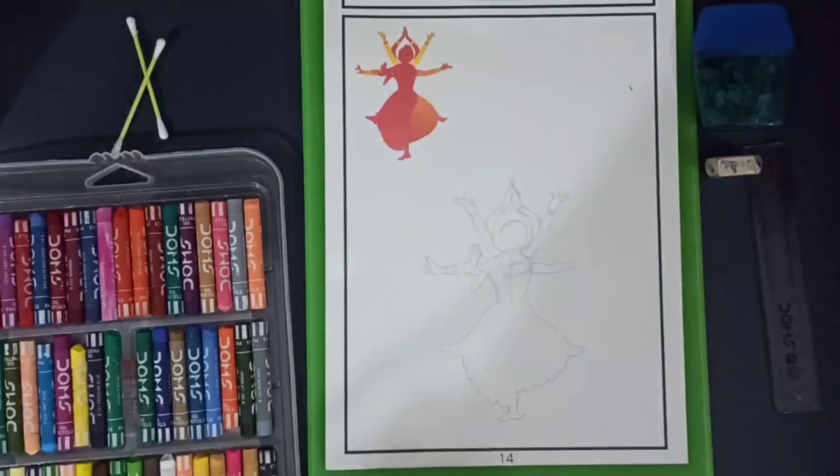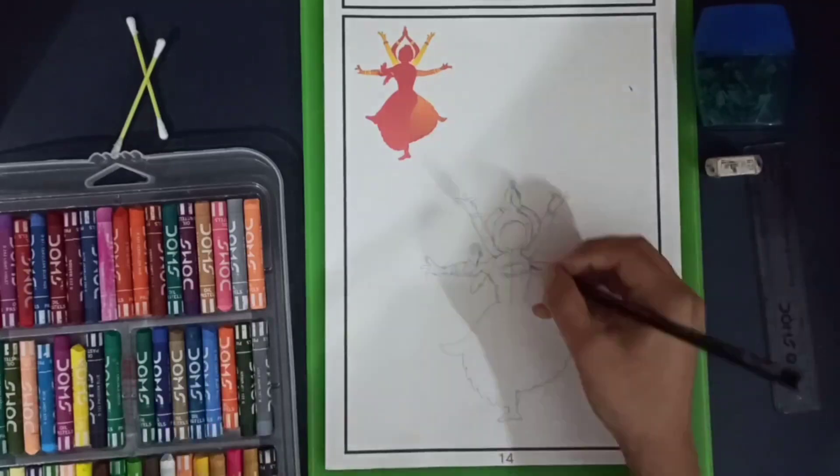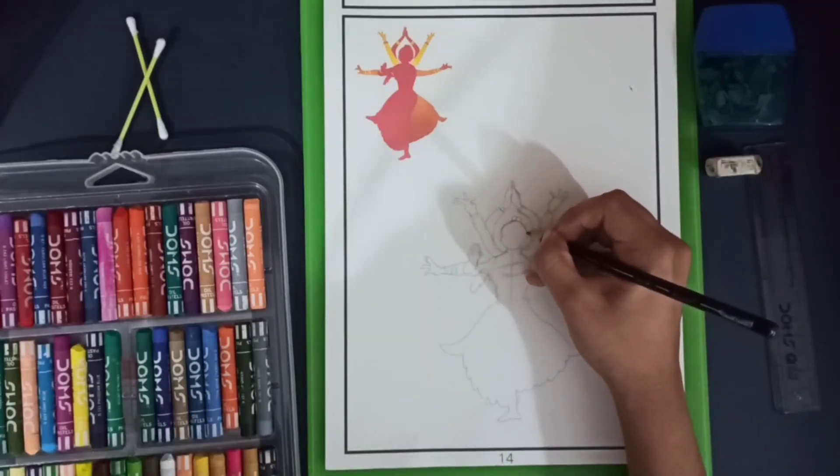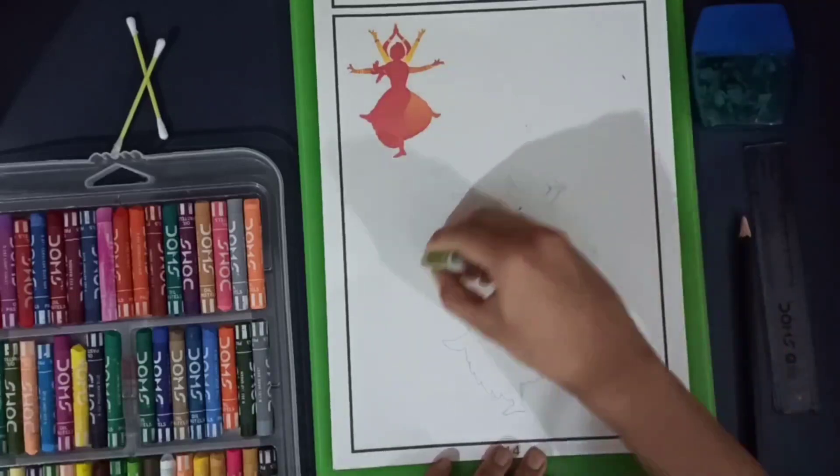Also, in case if we make any mistakes, it will be easier for us to erase it. Once I'm done with the pencil sketch, I'm just erasing the darkness of the pencil so that it is light enough.